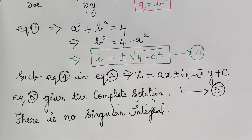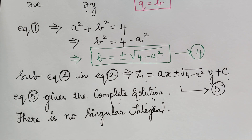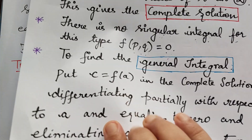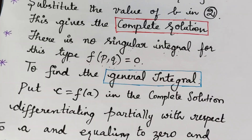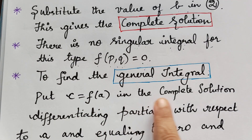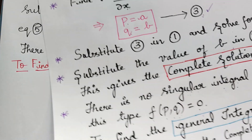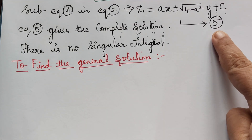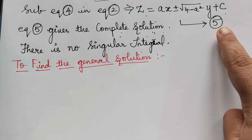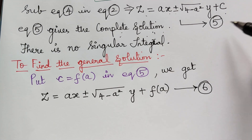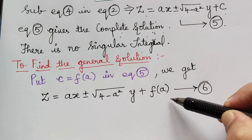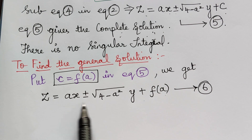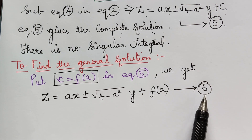Next, we have to find the general solution. In order to find the general solution, we have to put c equal to a function of a in the complete solution. Equation 5 gives us the complete solution, so in equation 5 we replace c with f of a. The new equation obtained is marked as equation 6.